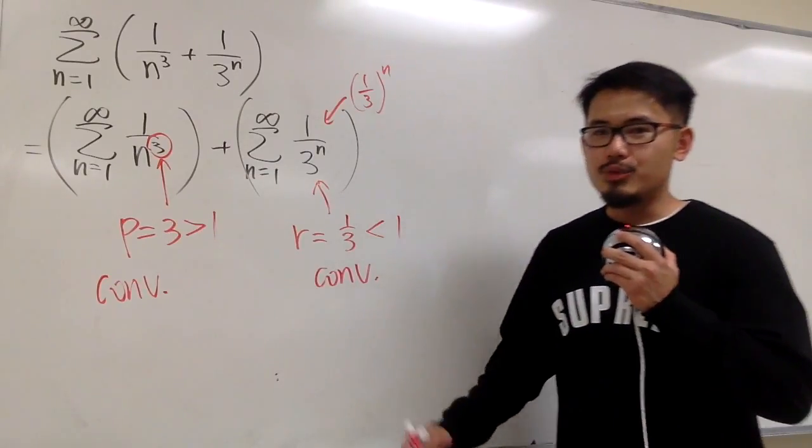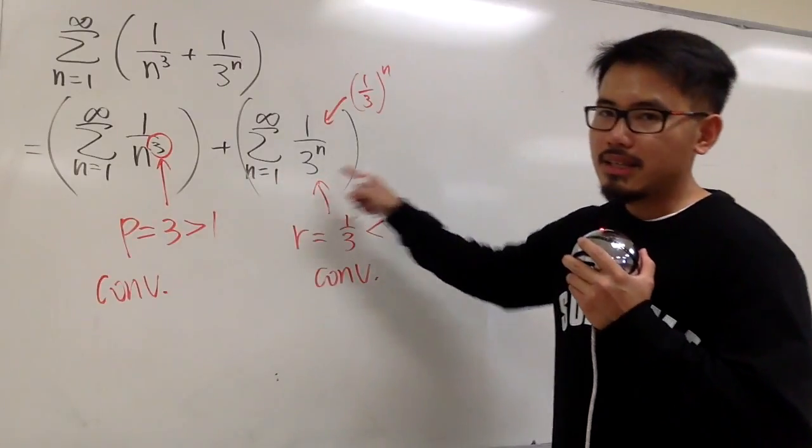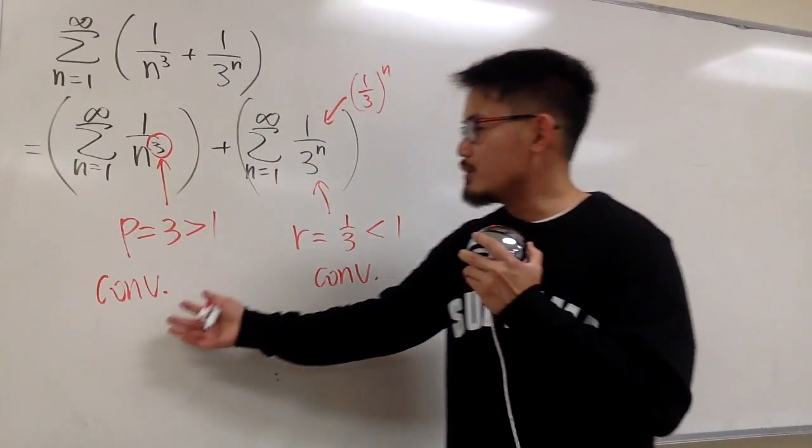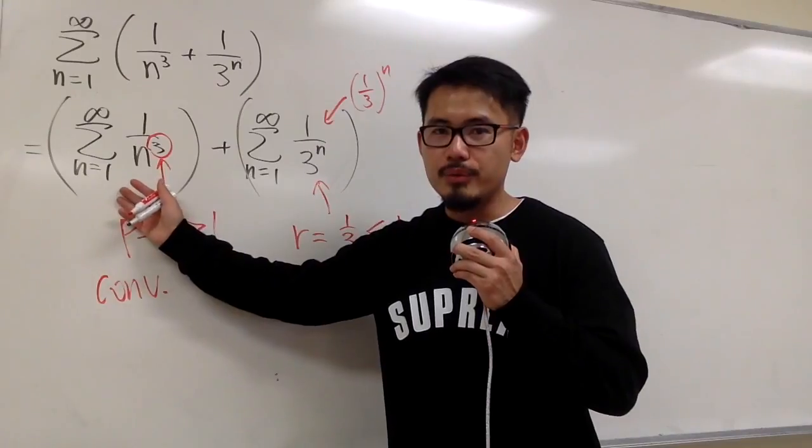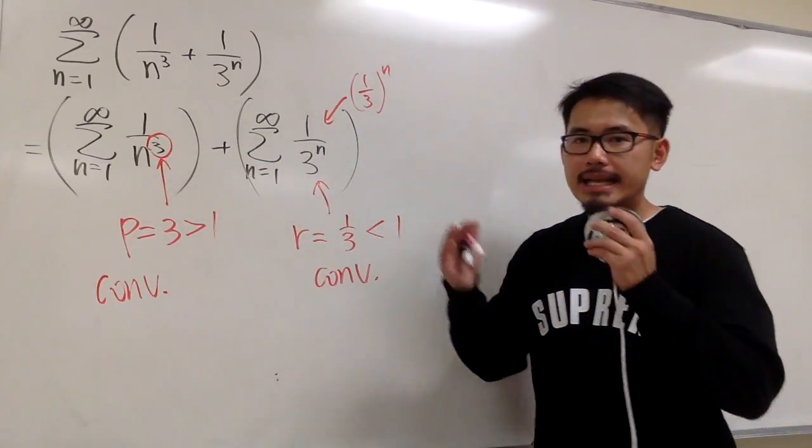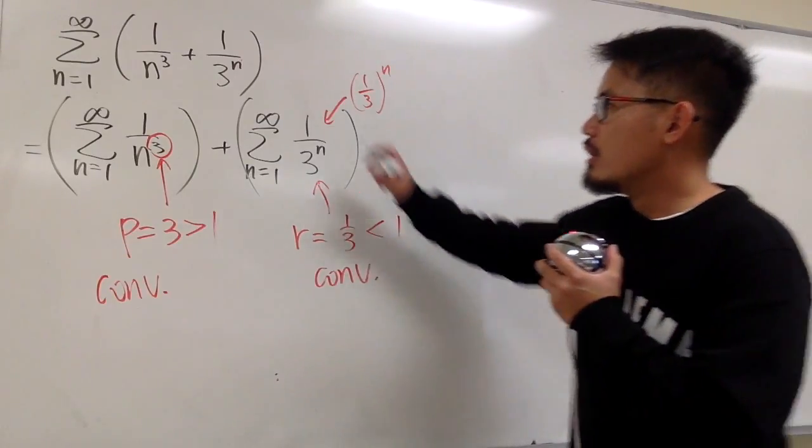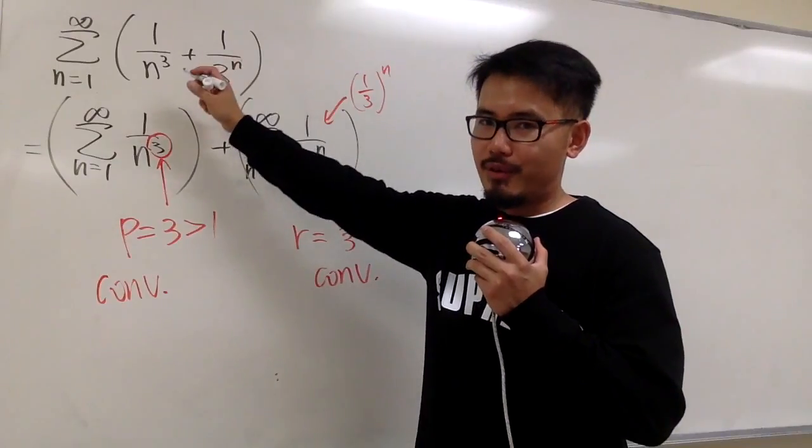And then here is a little theorem. When you have a convergent plus another convergent, just remember this. Convergent is like you are going to get a finite value, and then you add with another finite value. At the end, you will always end up with a finite value. So the original also has to converge.